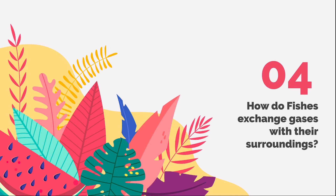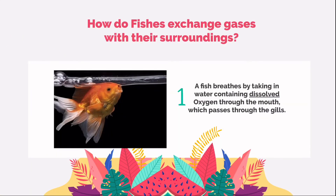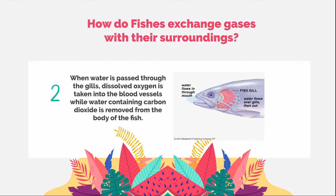Now that we know how the respiratory system works for humans, what about fishes? Since oxygen is needed for all living things for survival, how do fishes breathe underwater? Firstly, a fish breathes by taking in water containing dissolved oxygen into the mouth. This water is passed through the gills, which contain many blood vessels. When the water is passed through the gill cover, dissolved oxygen is taken into the blood vessels and passed to all parts of the fish's body. Water containing carbon dioxide is then passed out of the fish's body from under the gill cover.